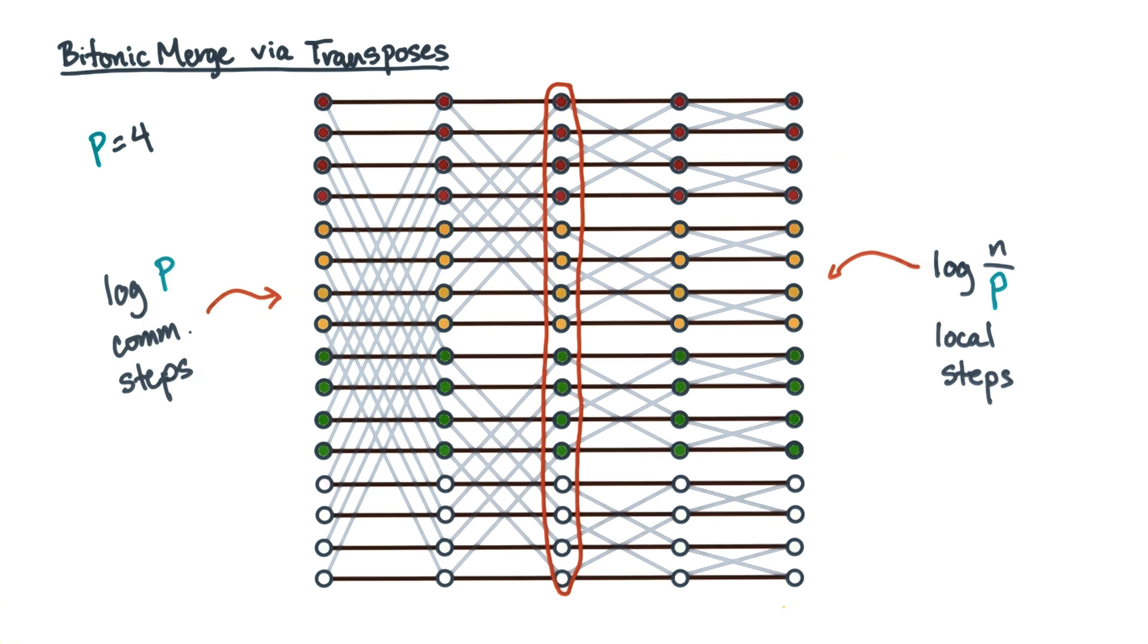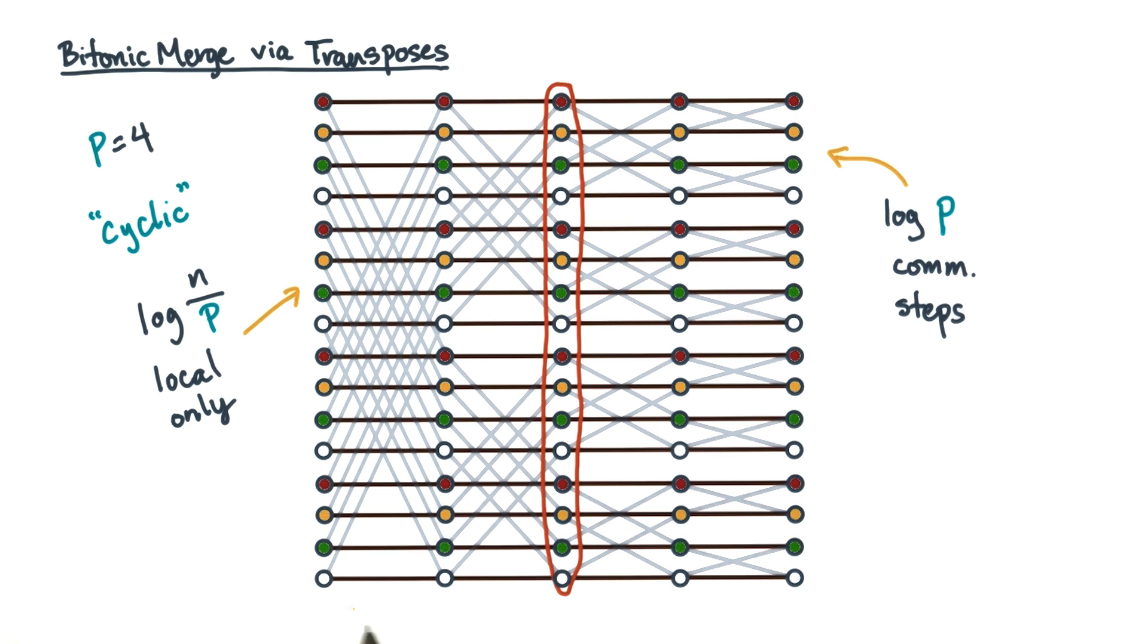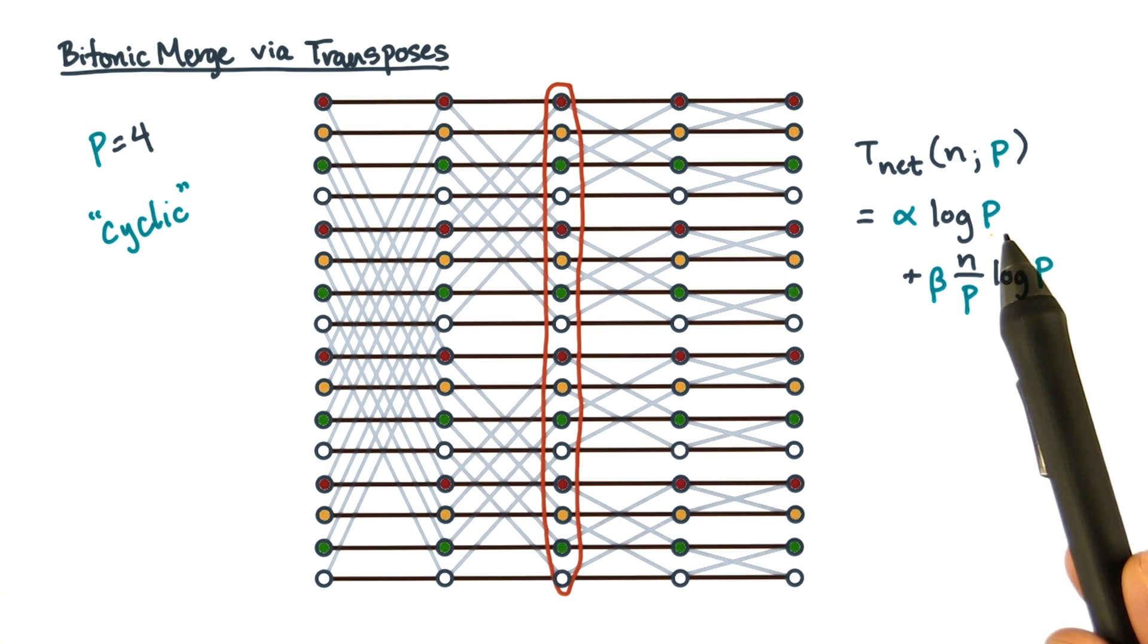The second scheme was the cyclic scheme. It has log n over p stages of purely local computation followed by log p stages of communication. The running time for the two schemes is the same. It's basically alpha log p plus beta times n over p log p.